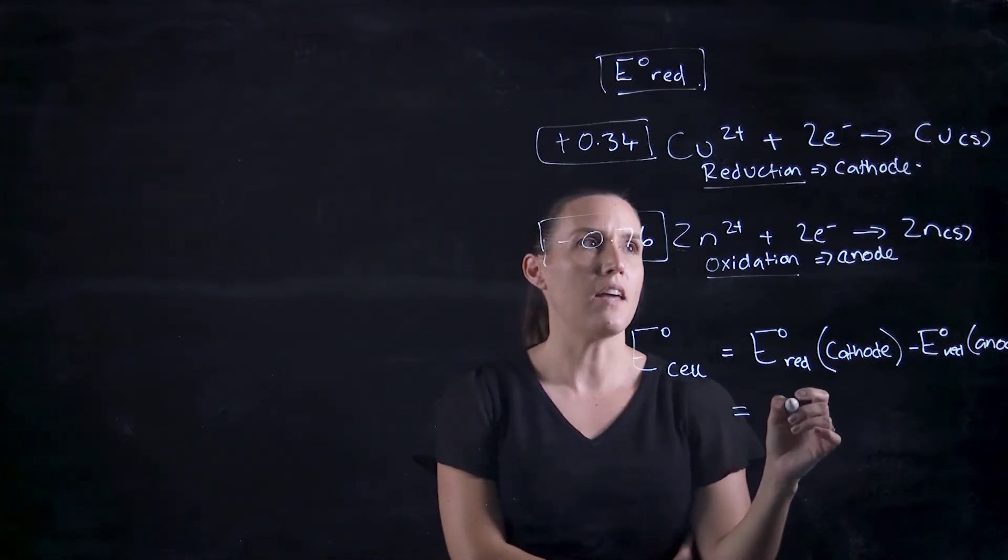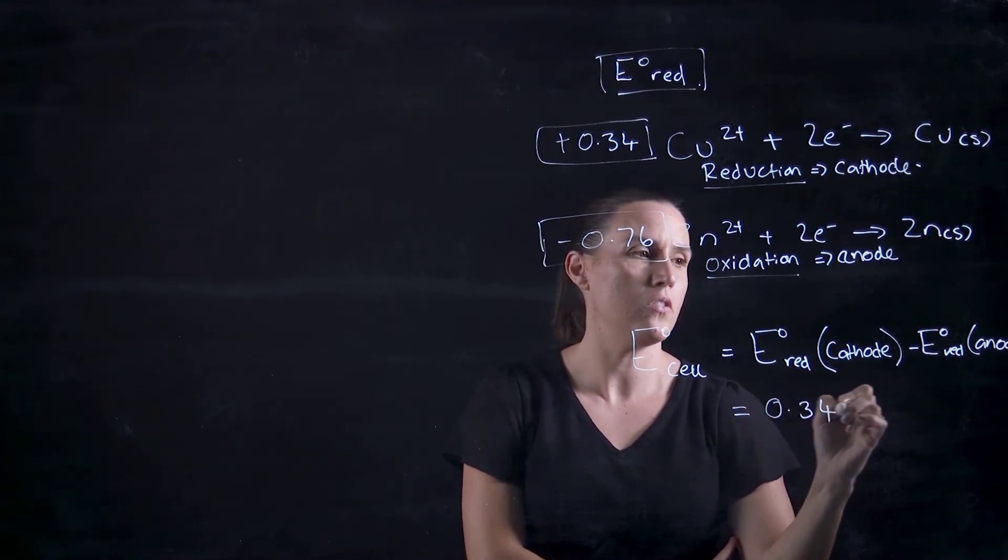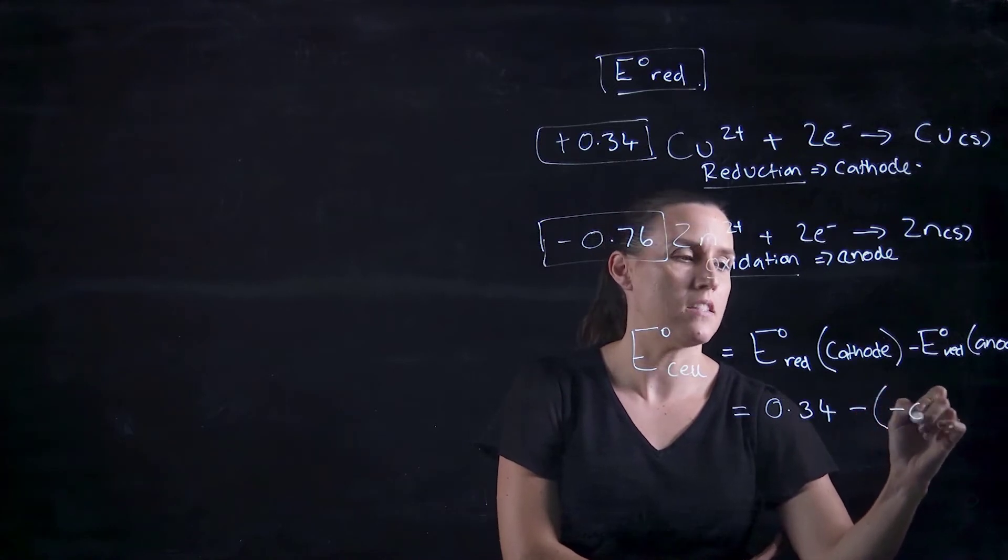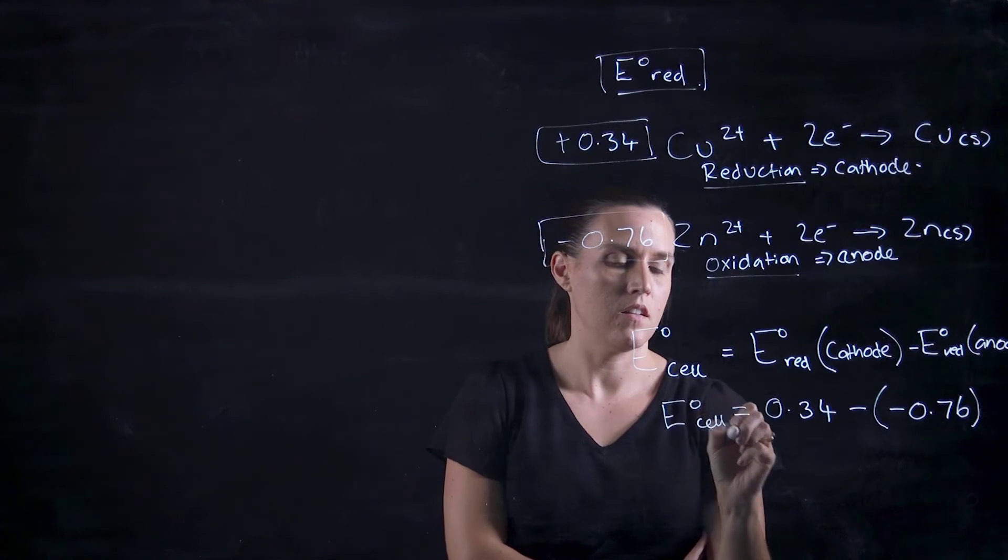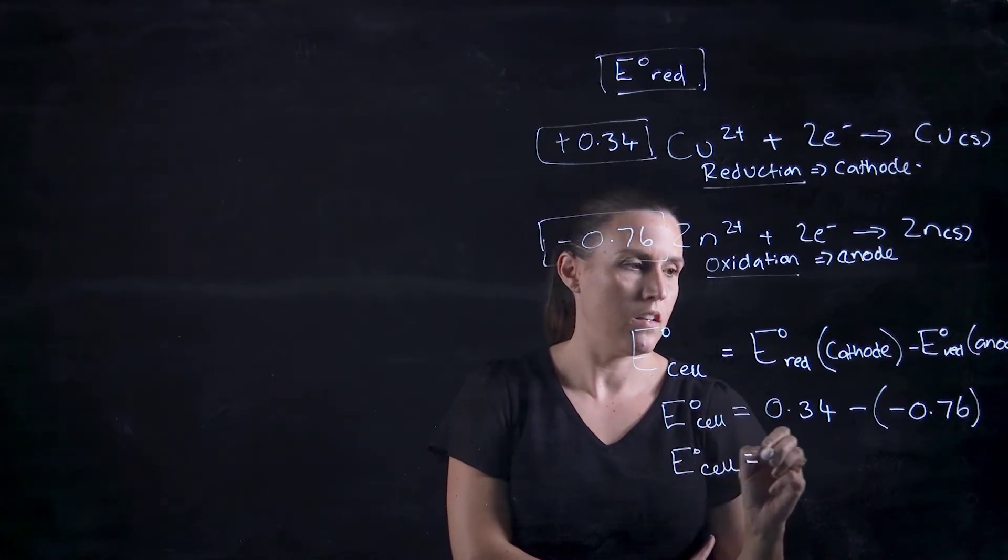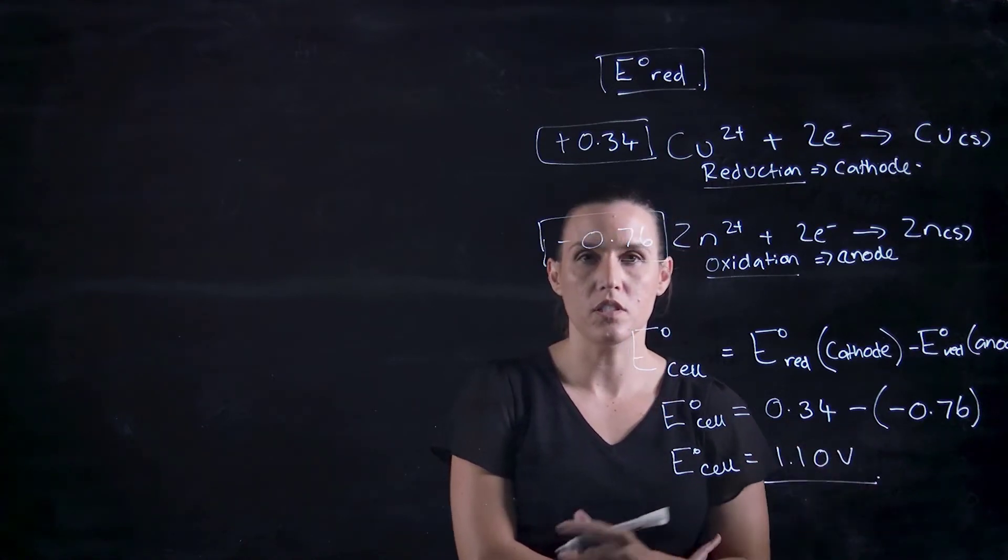If we put these ones together, the cathode is the copper, so 0.34 minus this one here, so minus negative 0.76, which would give us 1.1 volts for that system.